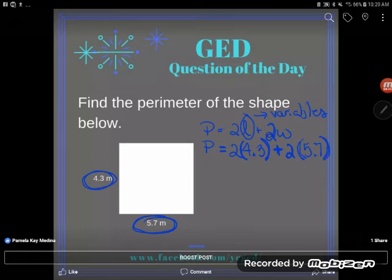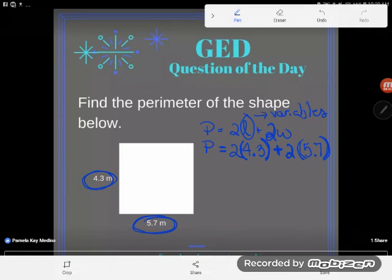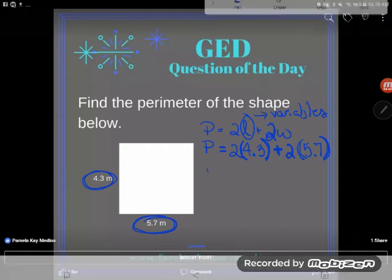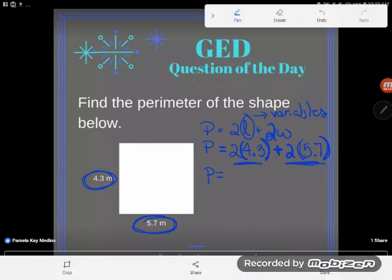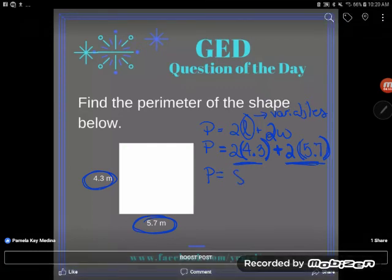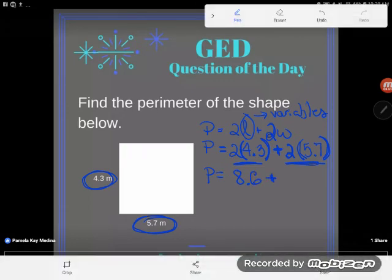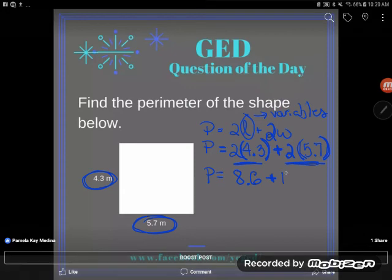And so once again, I'm going to plug in that 5.7 using my parentheses to mean multiply. Great. Now that you have your substitution done, you plugged in the values that you know, you can just start simplifying. You can start doing the math here. And remember with your order of operations that you should do multiplication before you do addition. So I'm going to multiply these two first. So I'll do 2 times 4.3, and that will be 8.6. I'll leave my addition for last. And I'm going to do 2 times 5.7. Let's see, I think that would be 11.4. You should check me in your calculators though, y'all. I love to make mistakes.